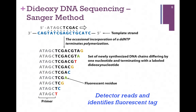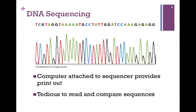A detector connected to the sequencer will read the fluorescence and identify the tag, and therefore the sequence of nucleotides. The computer provides a printout of that sequence of DNA. It still must be manually checked to confirm it, but it's a very efficient process of DNA sequencing.